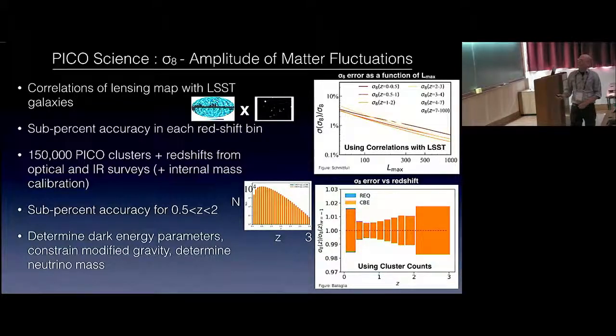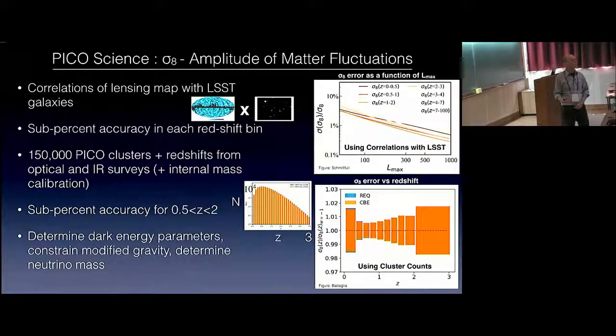Coming from these correlations, we would also get Sigma-8 through correlations between the lensing and LSST galaxies. Here I'm showing the fractional error on Sigma-8 as a function of the maximum l on which the analysis is done. You can see that right here at l's larger than about 200, we get sub-percent accuracy on Sigma-8 from this cross-correlation.